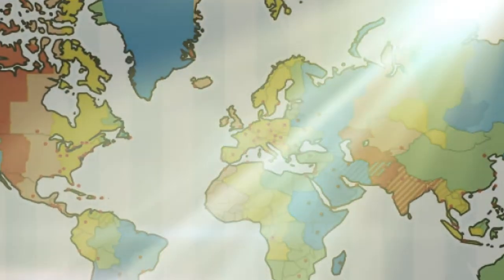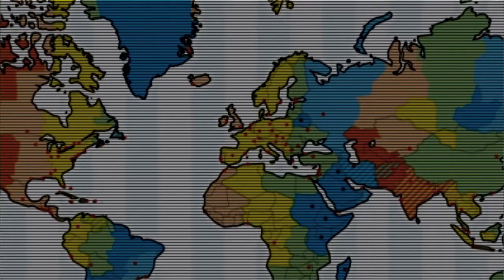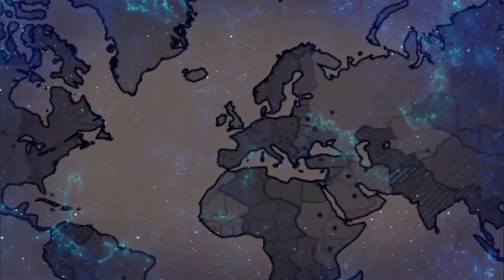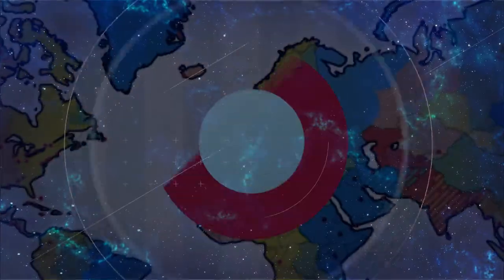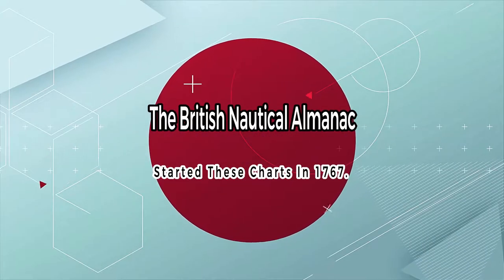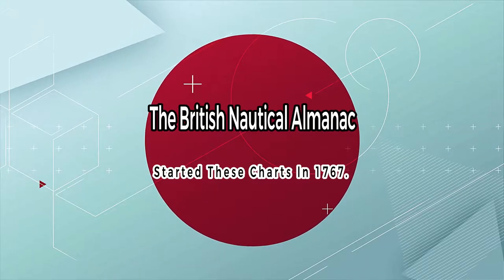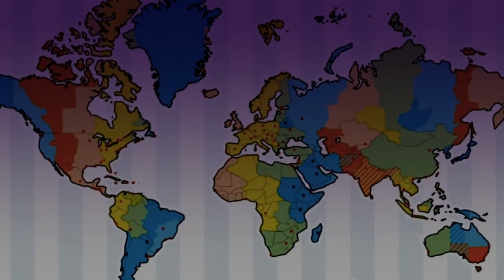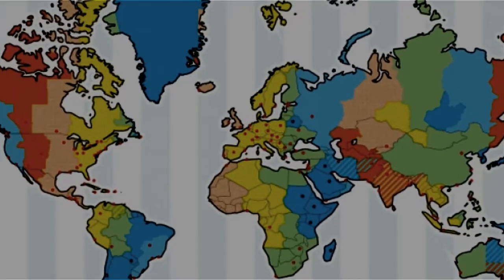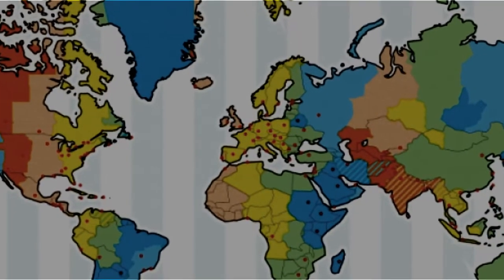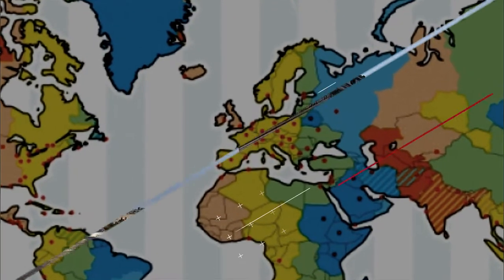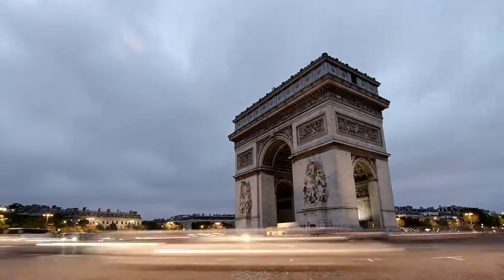The main factors that favored Greenwich as the site of the prime meridian were: Britain had more shipping and ships using the Greenwich meridian than the rest of the world put together at that time; the British Nautical Almanac started these charts in 1767; and the Greenwich Observatory produced data of the highest quality for a long time.